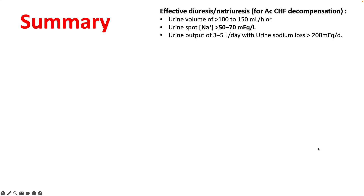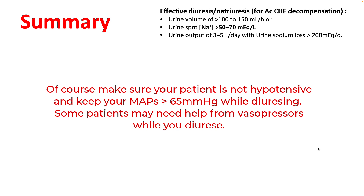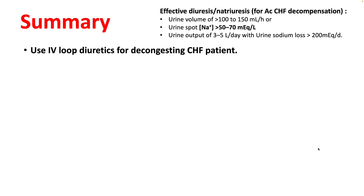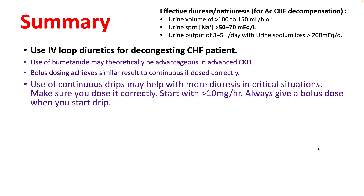To summarize: effective diuresis or natriuresis is defined as urine volume more than 150 mL per hour with urine spot sodium more than 50 mEq/L, targeting urine output 3–5 liters per day with urine sodium loss more than 200 mEq per day. Use IV loop diuretics for decongesting congestive heart failure patients. Use of bumetanide may be theoretically advantageous in advanced CKD. Bolus achieves similar results to continuous if dosed correctly. Use continuous drip in critical situations — start with more than 10 mg/hour and always give a bolus along with the drip.